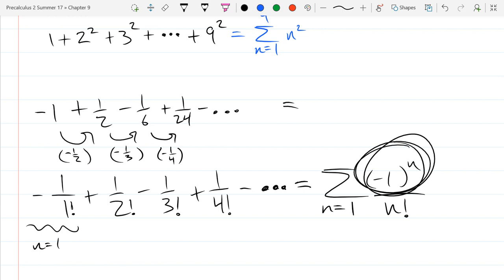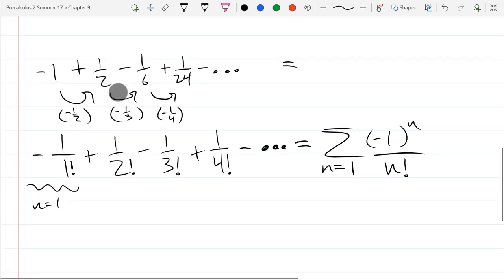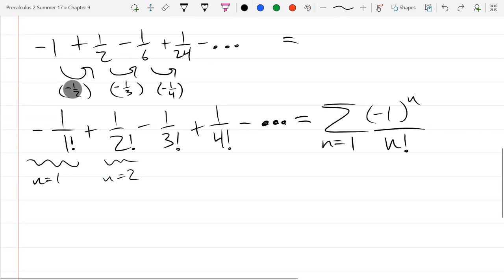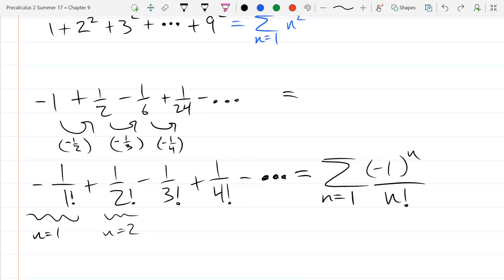So we check the alternating signs. And if I plug in some n values, this n = 2, we got 2! down there, and (-1)² is positive 1. So that's that positive 1/2 term. And I can keep checking down the line. Now this sum does not stop anywhere, so it's not okay to just leave it blank. But we fill in infinity.